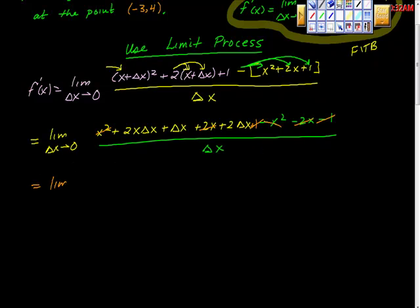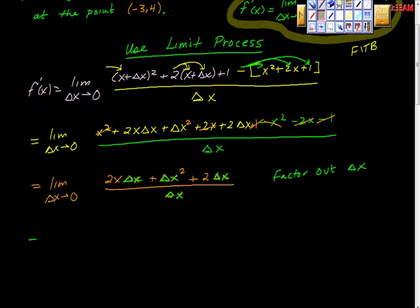When we do our rewrite, we get the limit as change of x approaches 0 of 2x change of x plus change of x squared plus two changes of x all over change of x. Now hopefully you're seeing that all of these terms at the top have at least one factor of change of x in them. So I'm going to factor out change of x.